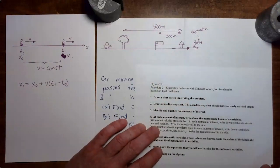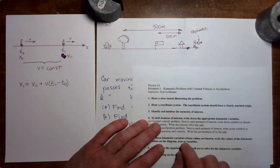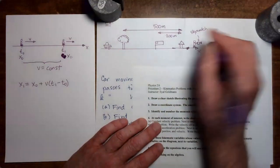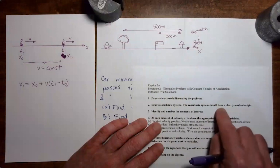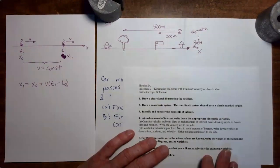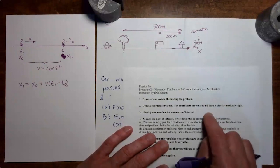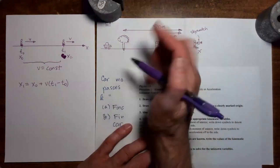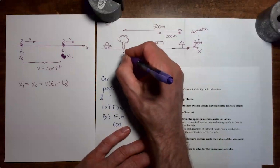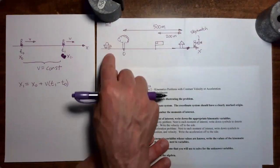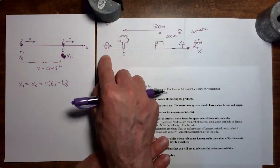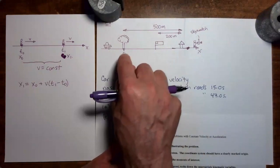Step one is to draw a clear sketch illustrating the problem. We have the beginnings of a sketch here, and we'll add more information as we proceed. Step two: coordinate system. We call the line our x-axis and place the origin at the leftmost location of interest, which is the tree. So x equals 0 is placed at the tree, since that's where the problem really starts.